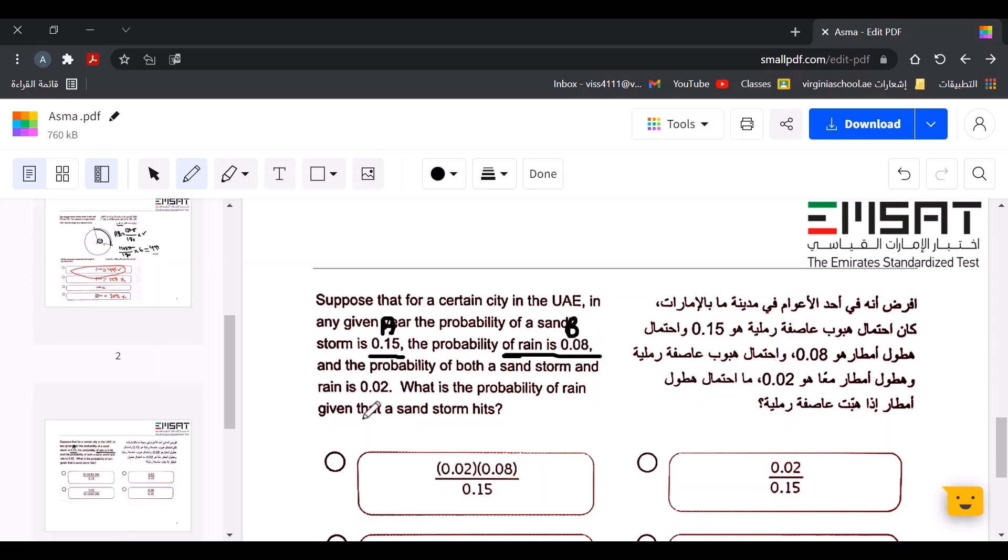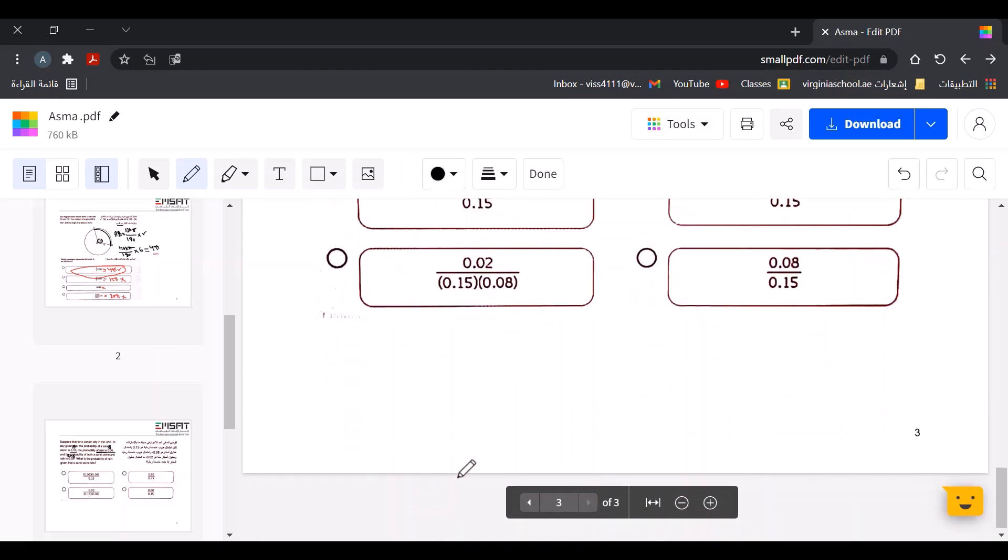and then the probability of both is A and B. To find the probability, I need to use the conditional probability formula.